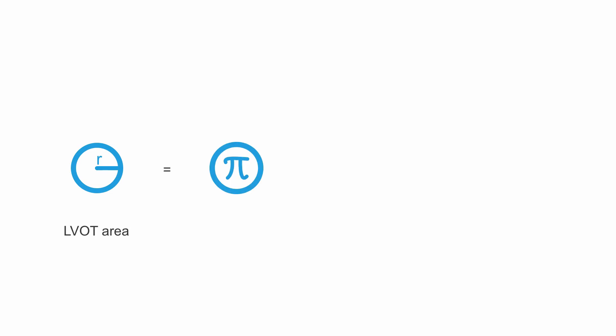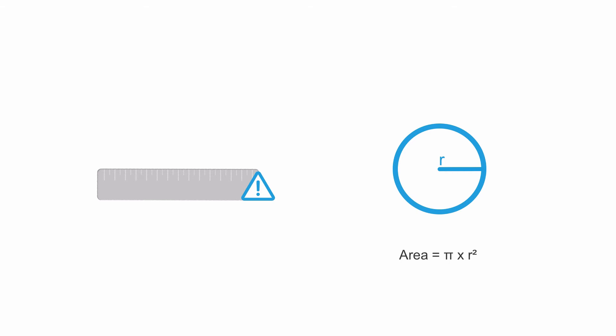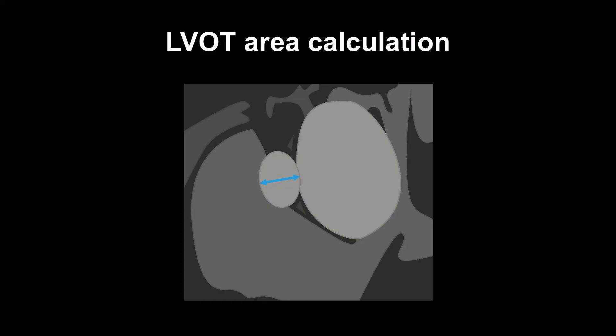The left ventricular outflow tract area is equal to pi multiplied by the LVOT diameter divided by 2, squared. The importance of making an accurate measurement at a consistent position within the LVOT is paramount. Since distance values are squared, any measurement errors at this point are magnified. The left ventricular outflow tract area calculation is one of the major pitfalls of this technique.